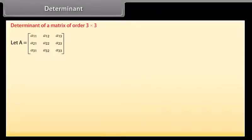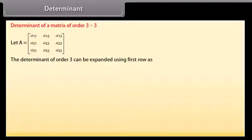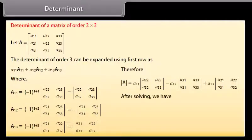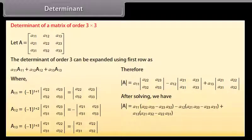So we have: determinant of A = a×d − b×c. For a 3×3 matrix A with rows [a11, a12, a13], [a21, a22, a23], [a31, a32, a33], the determinant expanded along the first row equals: a11(a22·a33 − a23·a32) − a12(a21·a33 − a23·a31) + a13(a21·a32 − a22·a31). The same result is obtained by expanding along the second or third row.